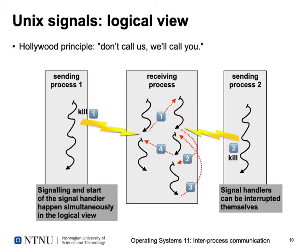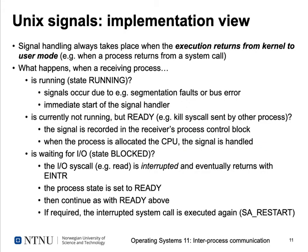Logically, signal delivery appears simultaneous with the send, but in practice on a single-processor system only one process runs at a time. A signal is recorded in the process control block and delivered when the recipient process is next activated — for example, when it returns from a system call such as a read operation returning from kernel to user mode.